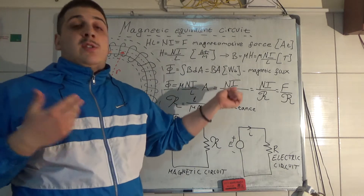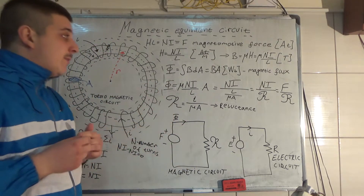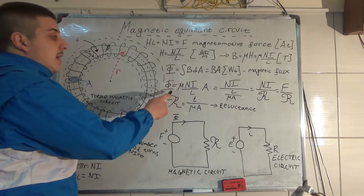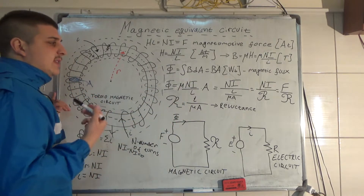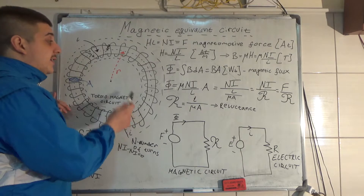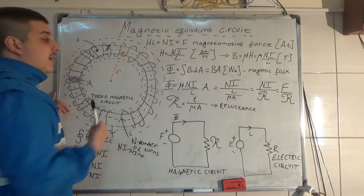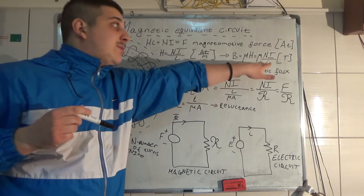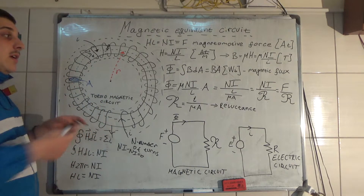The unit of magnetic flux is the Weber. So the magnetic flux Φ equals μ times N times I times A divided by L. As you can see, the longer the circumference of the toroid, the smaller the magnetic flux; the higher the permeability, the bigger the flux; and the bigger the cross-sectional area A of the toroid, the bigger the flux.